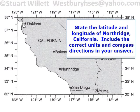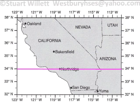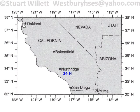State the latitude and longitude of Northridge, California, including the correct units and compass direction. I'm highlighting the horizontal line at 34 degrees north — that's your latitude, and you can see that runs through Northridge.